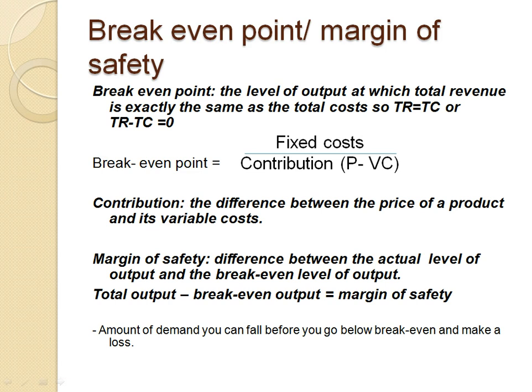Margin of safety is the difference between the actual level of output and the breakeven level of output. For example, if you plan to make 150 sales and your breakeven point is 100 sales, your margin of safety is 50 sales. If output falls below the breakeven point, demand is falling and you start making a loss.